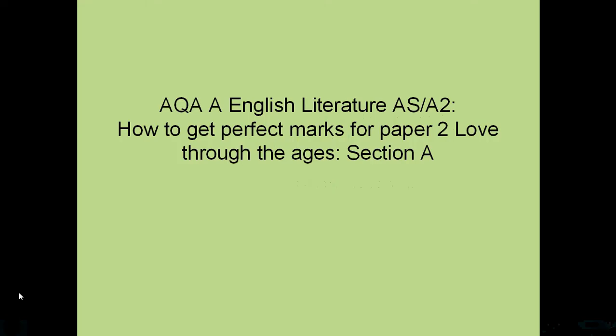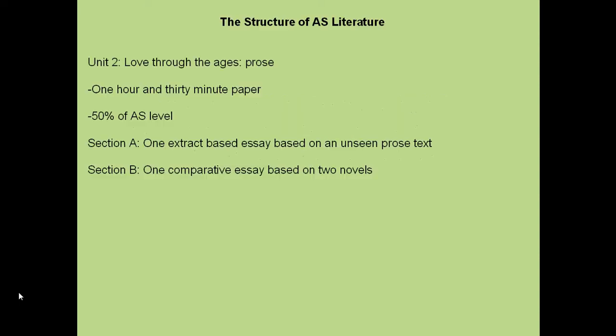Hello everyone. In this video we're going to explore how you will achieve perfect marks for the AQA A English Literature AS paper. We're going to focus on Paper 2, Section A. This paper is 50% of your AS grade — Paper 1 is the other 50%. It's a one hour 30 minute exam with two sections. Section A, which we'll now focus on, is based on one extract where you'll be asked to explore an unseen prose text.